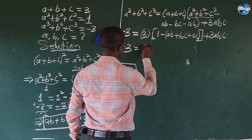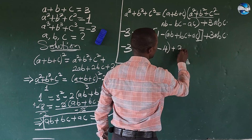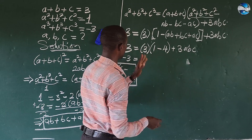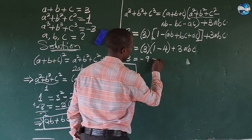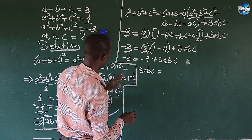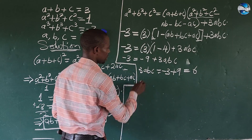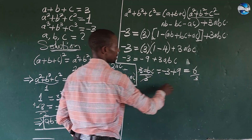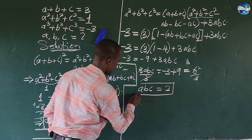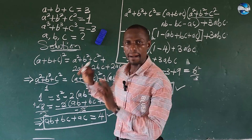So opening up: minus 3 equals 3 times minus 3, which gives us minus 9, plus 3abc. Rearranging, we have 3abc equals minus 3 plus 9, which gives us positive 6. Dividing both sides by 3, we get abc equals 2. We've now established another special expression to help us solve for a, b, c.